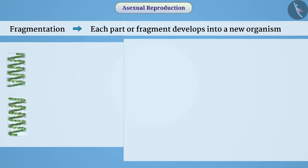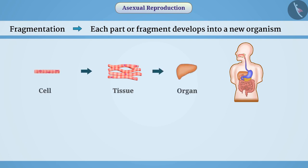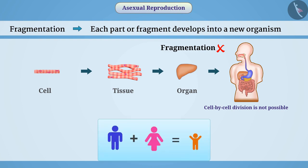The body structures of other multicellular organisms are complex. In such cases, tissues are formed from cells and organs are formed from tissues. The location of organs is fixed in the body, due to which cell-by-cell division of these organisms is not possible. Therefore, fragmentation is not seen in such organisms — instead, we see a more complex process of reproduction.